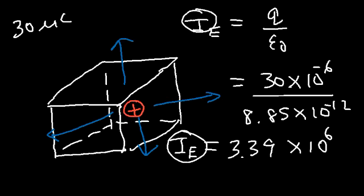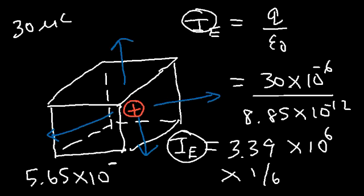If we wanted to calculate the electric flux through just one of the six faces of the cube, simply divide the total flux by 6. The electric flux through each face is 5.65 times 10 to the fifth newtons times square meters per coulomb.